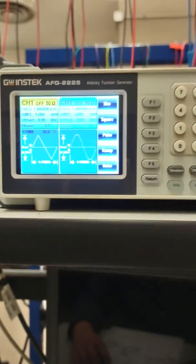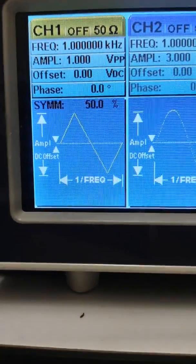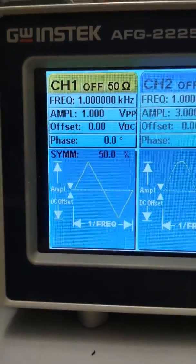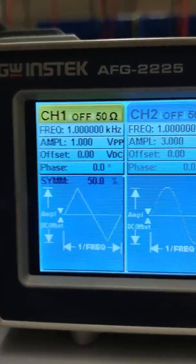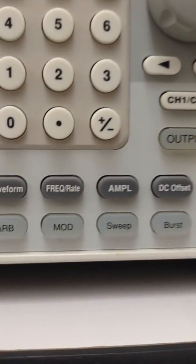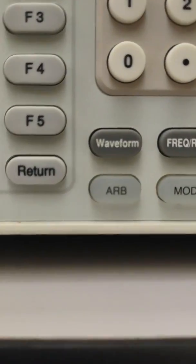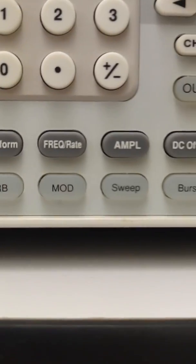Waveform, frequency rate, amplitude, DC offset, utility are the main buttons that we are going to be selecting for using this function generator. Purpose of a function generator is to output different types of functions or different types of waveforms at different frequencies, different amplitudes, different offsets.